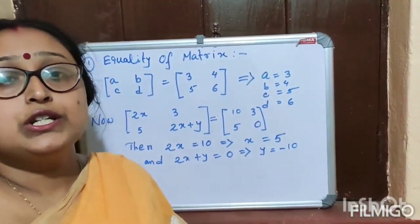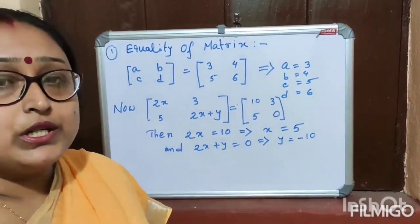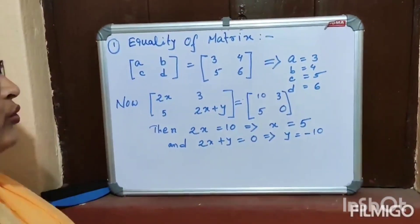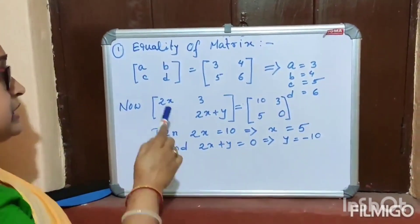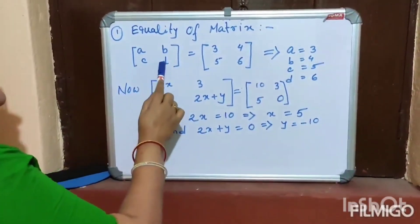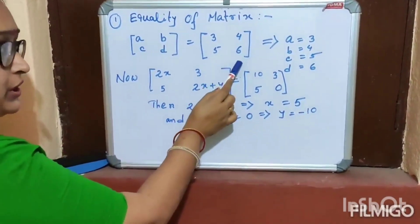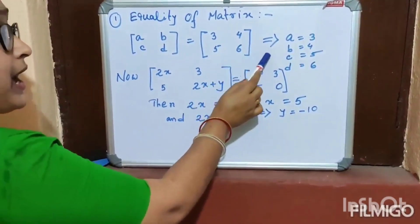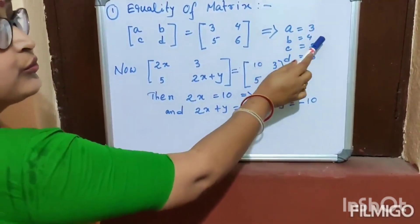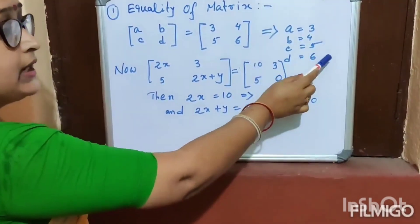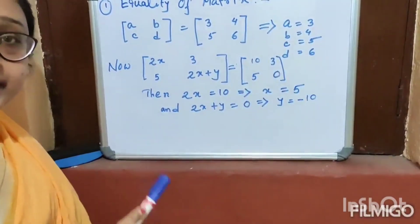Now start equality of matrix. What is equality of matrix? Look at the board. Equality of matrix means suppose [a, b, c, d] is equal to [3, 4, 5, 6]. This implies that a equal to 3, b equal to 4, c equal to 5, and d equal to 6. Understood?